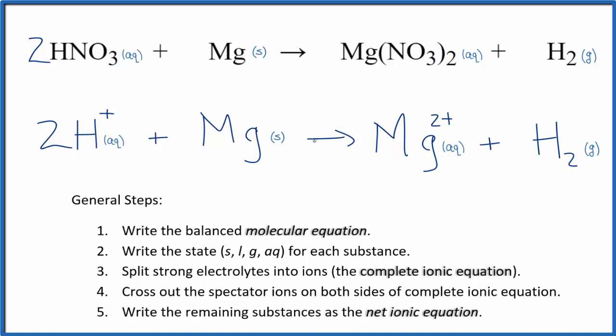So this is the balanced net ionic equation for HNO3 plus Mg. You'll note that charge is balanced. We have two times one plus, so we have a two plus in the reactants. In the products, we have a two plus. If you count the atoms up, they're balanced as well.